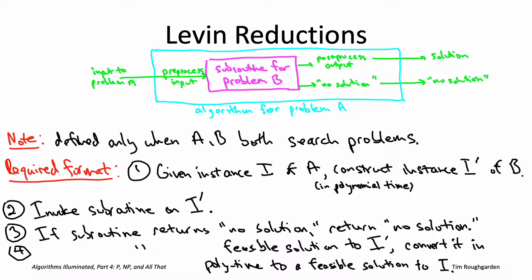For any book that talks primarily about decision problems rather than search problems, you're going to see Karp reductions instead of Levin reductions. This entire video playlist uses search problems because those are much more natural from an algorithmic viewpoint.